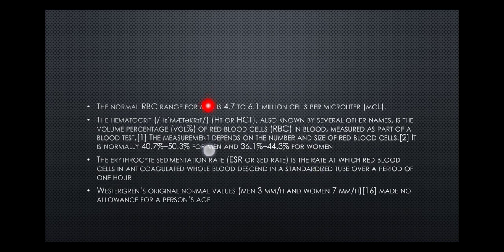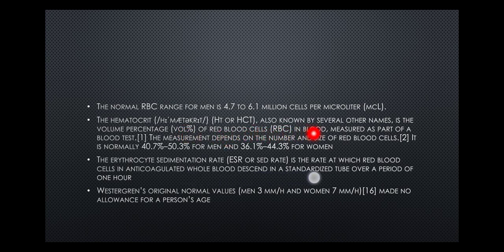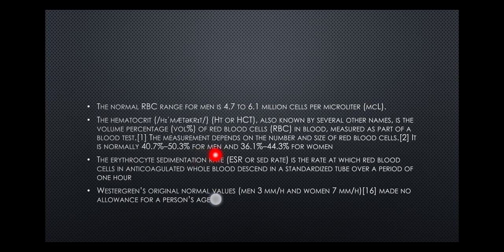The normal RBC range for men is 4.7 to 6.1 million cells per microliter. The hematocrit — also known by several other names — is the volume percentage of red blood cells in blood, measured as part of a blood test. The hematocrit measurement depends on the number and size of red blood cells; it is normally 40 to 50 percent for men and 36 to 44 percent for women.